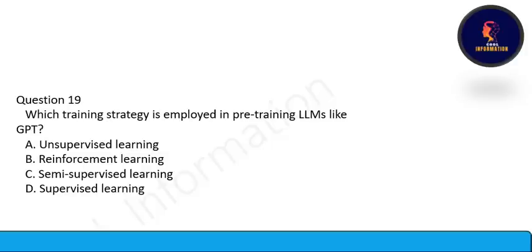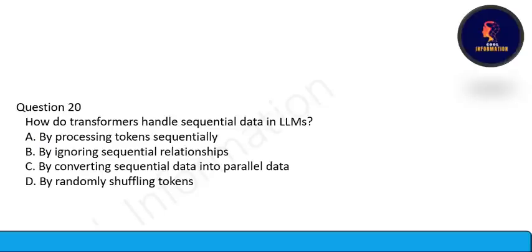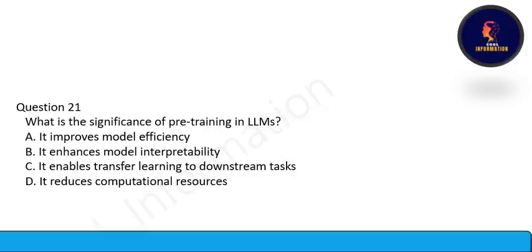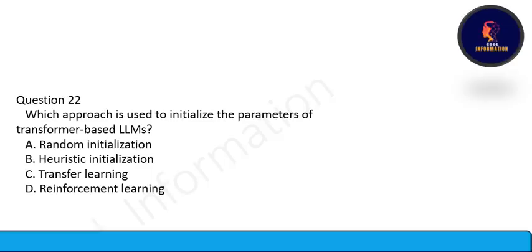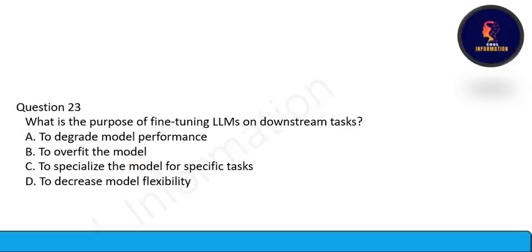Next question: Which training strategy is employed in pre-training LLMs like GPT? Unsupervised learning strategy is employed. Option A is correct. Next: How do transformers handle sequential data in LLMs? By converting sequential data into parallel data. Option C is correct. What is the significance of pre-training in LLMs? To enable transfer learning to downstream tasks. Option C is correct.